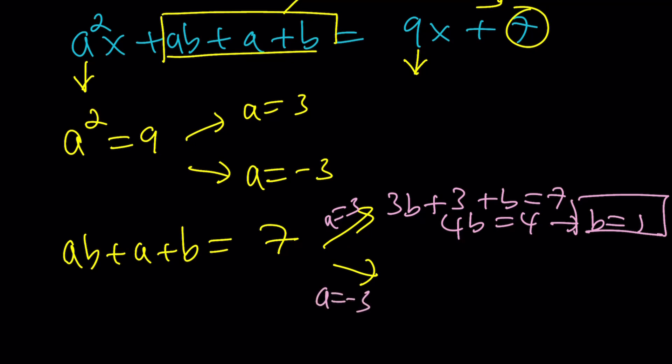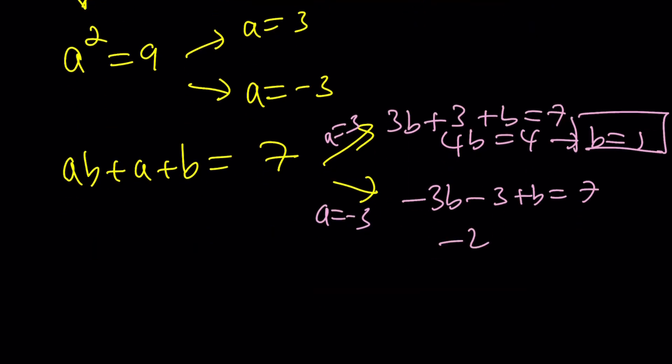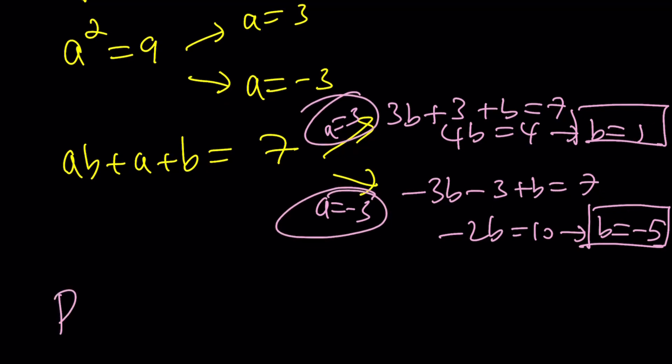And if a = -3, we get -3b - 3 + b = 7. This is going to be -2b equals 10. This means b = -5. And of course, this is for a = -3. So what's the conclusion?